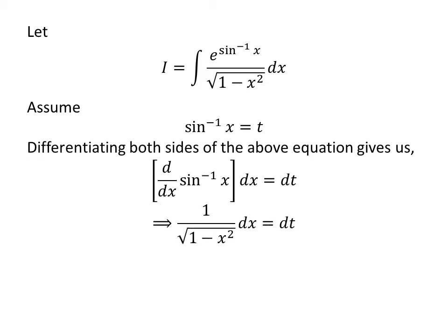As we know, derivative of arc sine of x with respect to x is equal to 1 upon square root of 1 minus square of x. So, 1 upon square root of 1 minus square of x times differential of x is equal to differential of t.